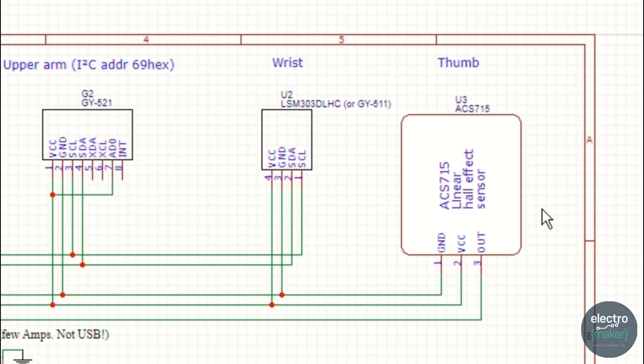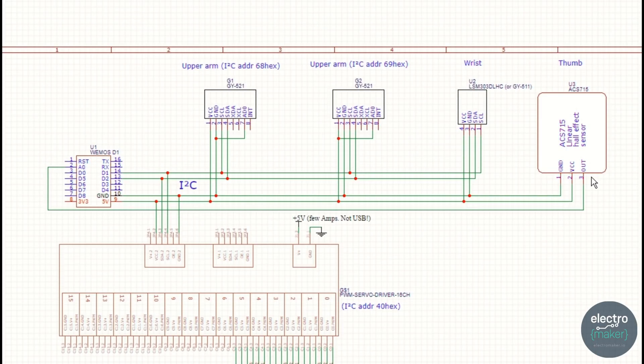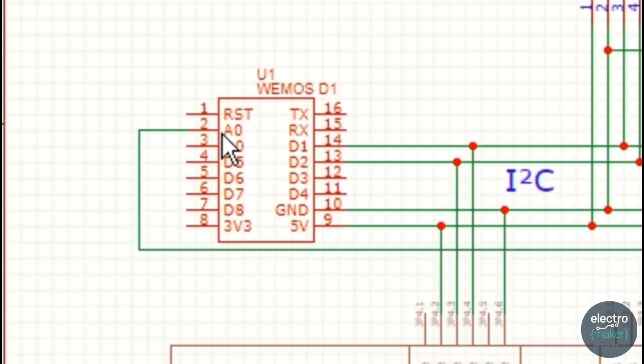The hall effect sensor is connected to ground, VCC and to the analog pin of the microcontroller. The PWM board also uses I2C but requires an additional power source to deliver enough current to the servo motors.